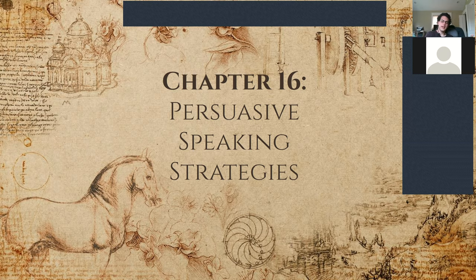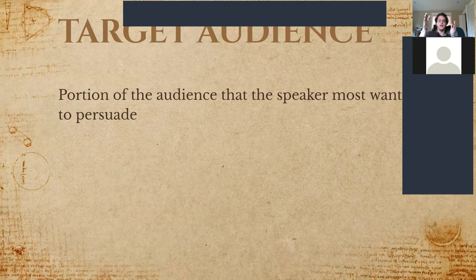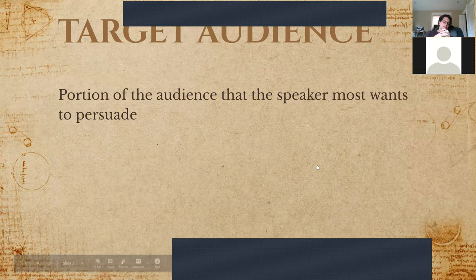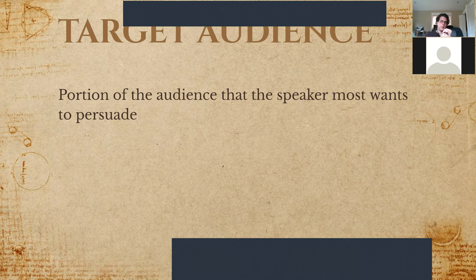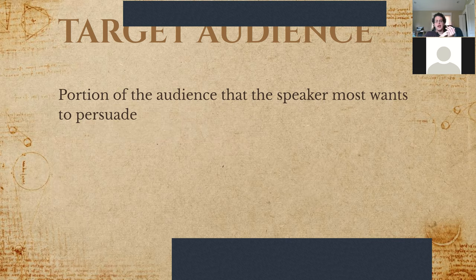Let's first cover the main target audience of our speech. What that essentially means is that you can't really expect in a persuasive speech to convince your entire audience. You can't really expect to give a speech to 30 people about why you should go vegan and walk out with 30 new vegans. You can't go into an audience of Republicans and expect to convince them all to switch to Democrat and vice versa. People are a little bit more set in their ways, so you have to identify which section of the audience you most want to convince at the end of your speech.